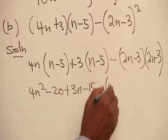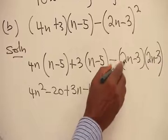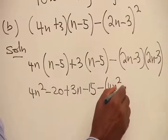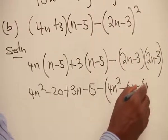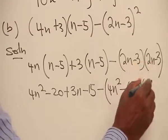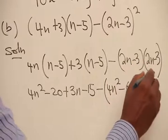2n times 2n is 4n squared. 2n times minus 3 is minus 6n. Minus 3 times 2n, minus 3 times minus 3 is plus 9. You cannot close this.